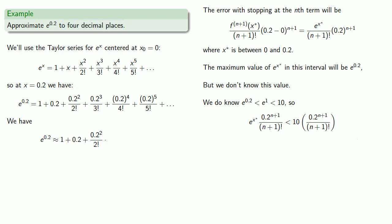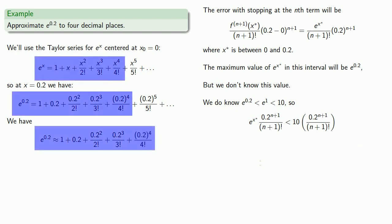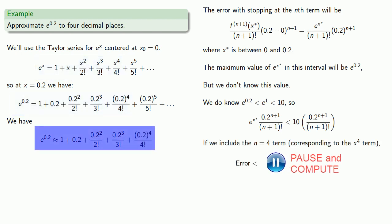Including the n equals 3 term is going to give us an error less than 0.00067, which will give us three decimal places of accuracy, but that's still too big, so we need to include the n equals 4 term. If we include the n equals 4 term, then our error will be about 0.0007, which gives us our four decimal places of accuracy. So e to power 0.2 is going to be approximated by this partial sum.